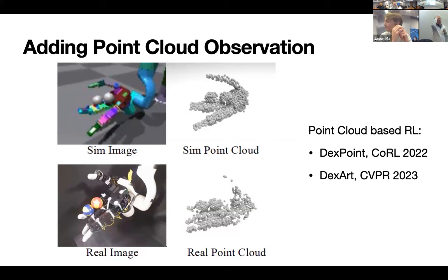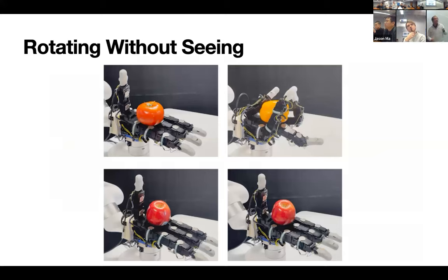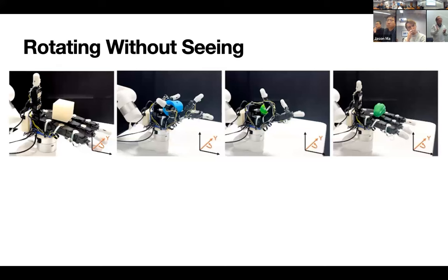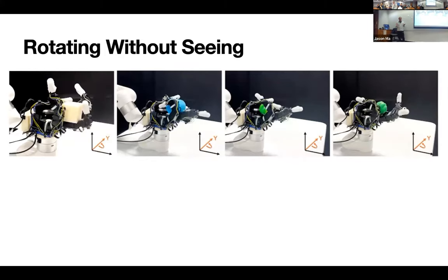Q: Do you use a history context of touch sensing? A: Yes, we have contact context of three to four frames. More does not help — actually it hurts if you go to 10 frames. The tactile sensing is still very noisy, so a little bit of history helps, but more actually does not.